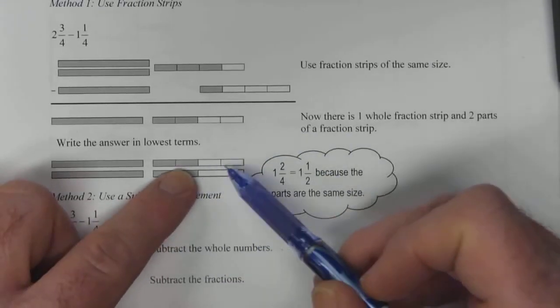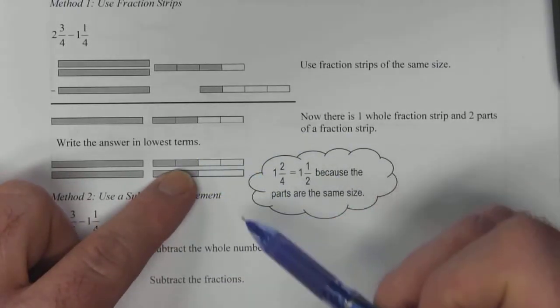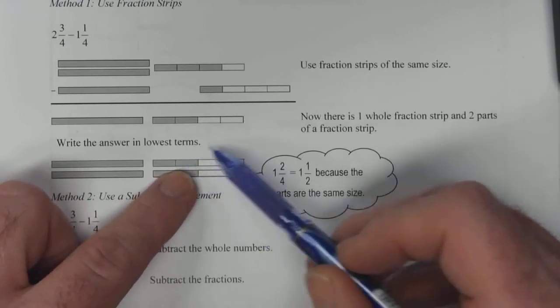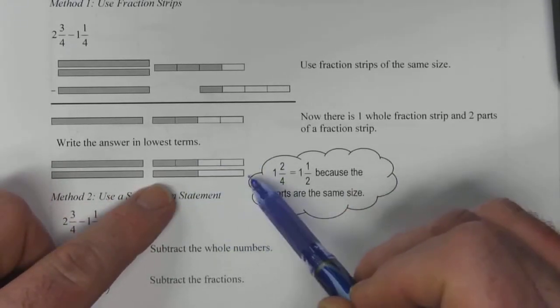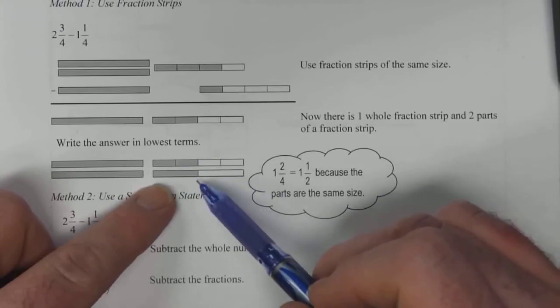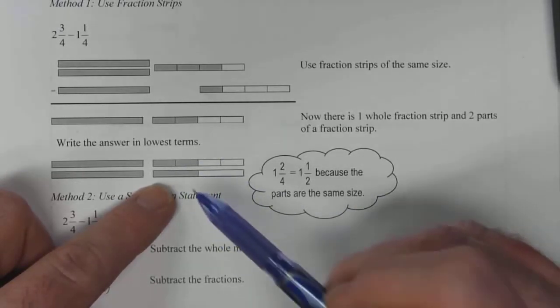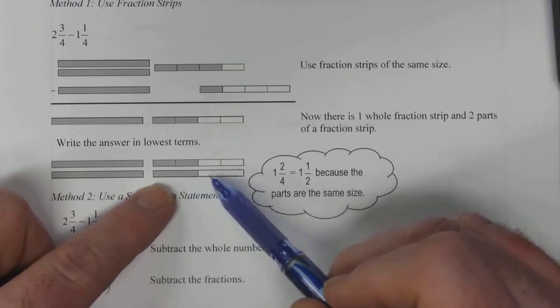So in this case you should be able to visually see that half of this strip is shaded, and in fact you can break it into halves instead of quarters and still have the same amount shaded. So instead of two fourths we actually have one half.